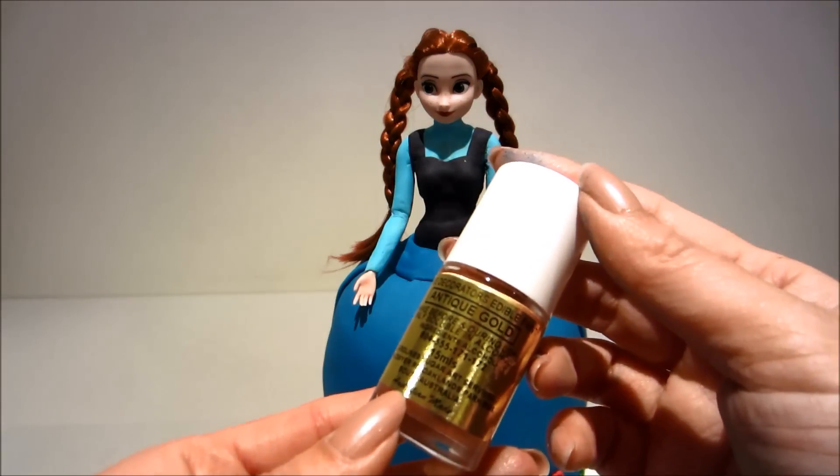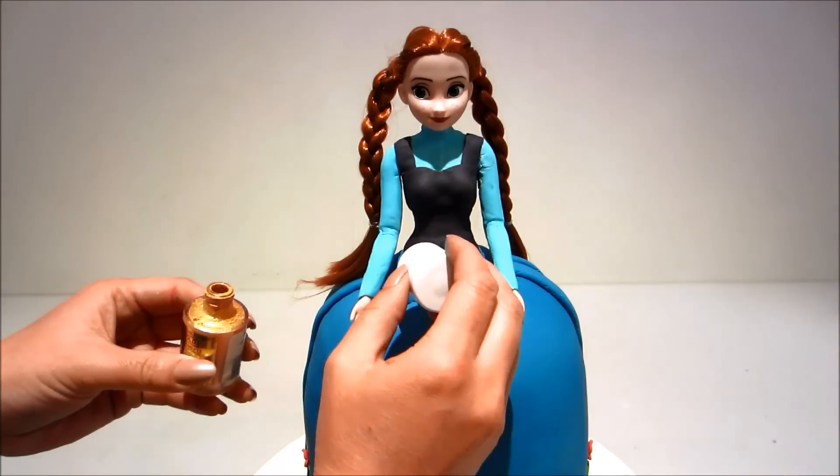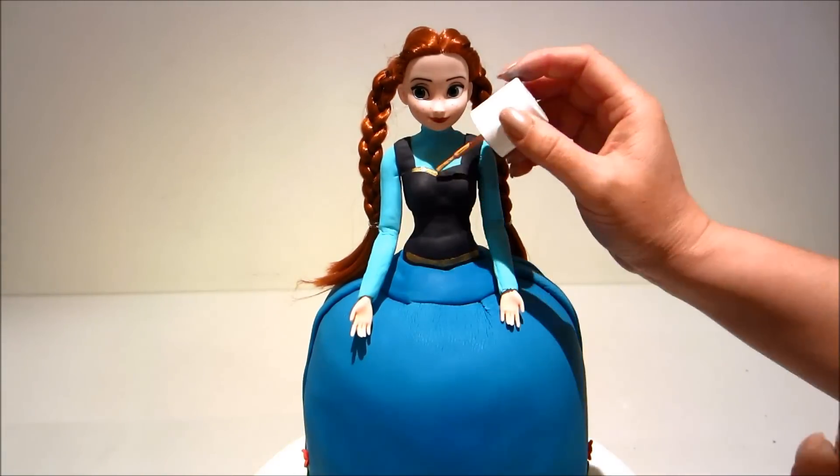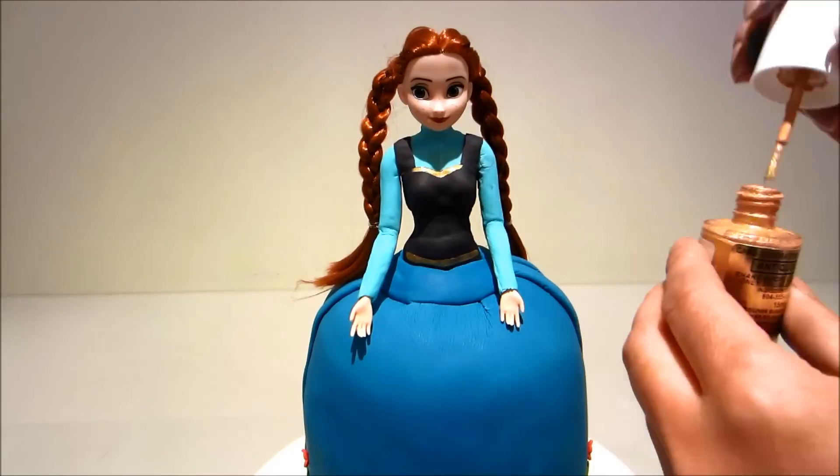Now I'm using an antique gold. This is an edible paint that you can get online or from your cake decorating supply shops, and I'm using it just to paint on the details of her dress.